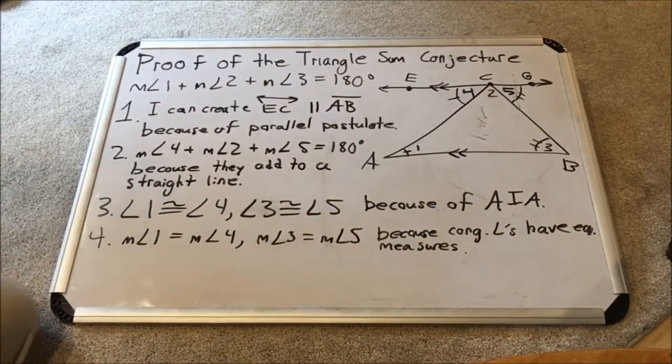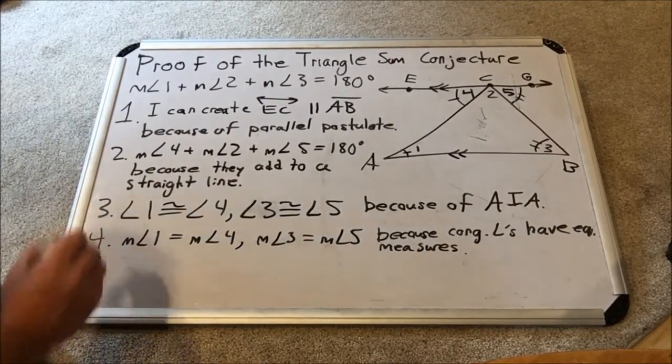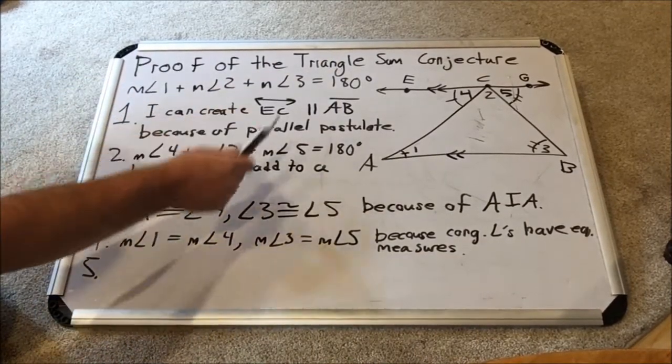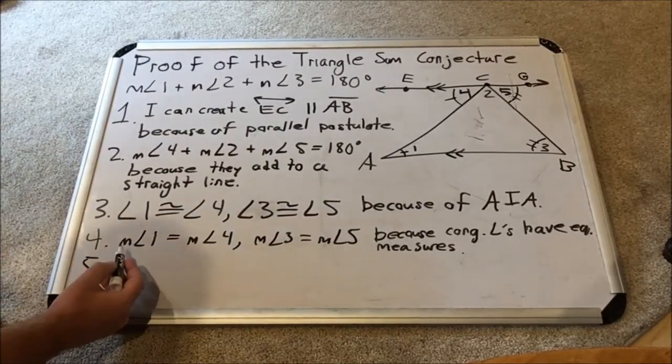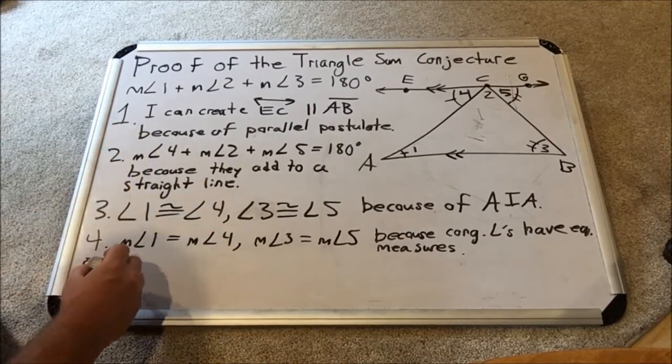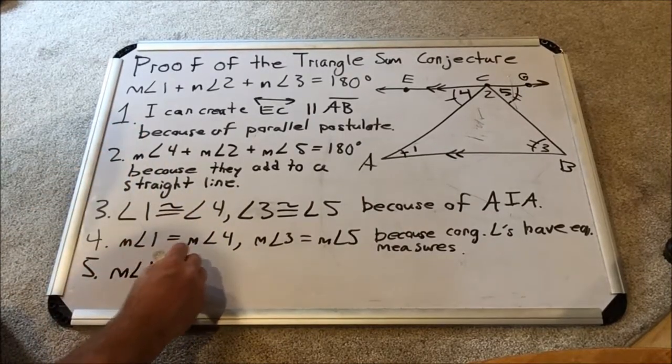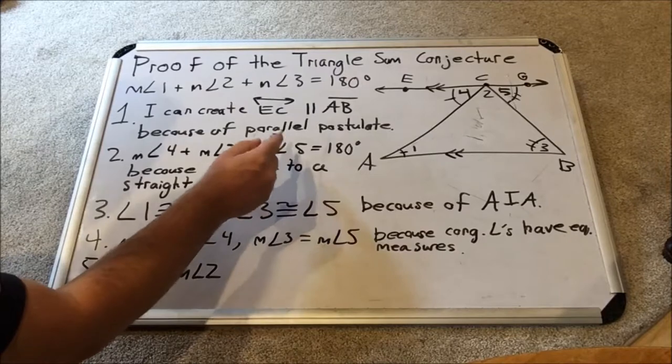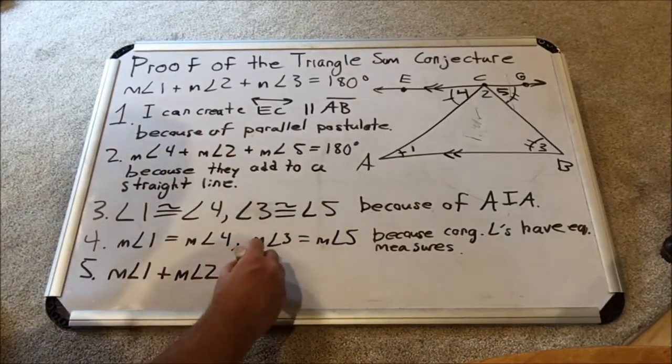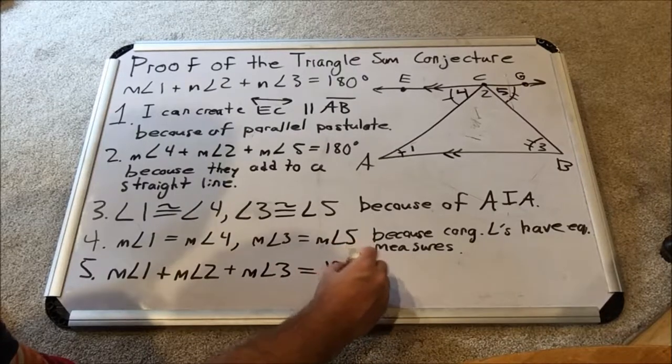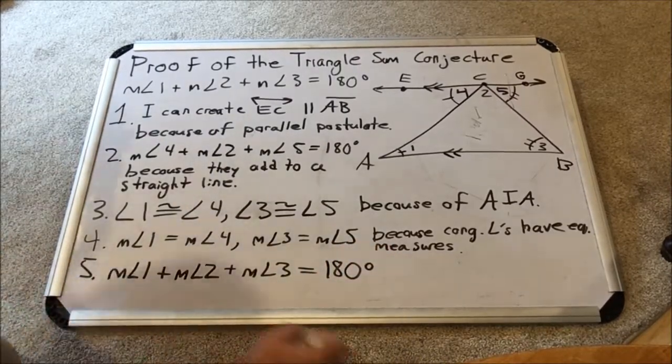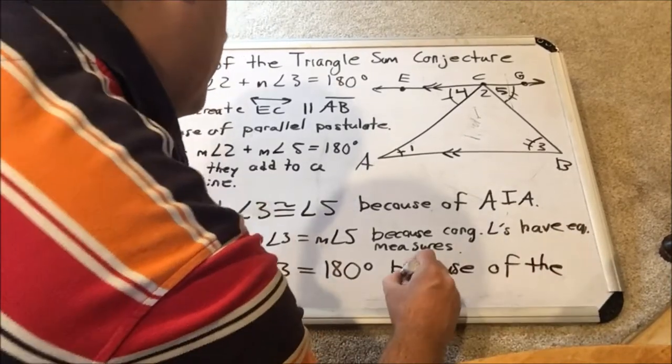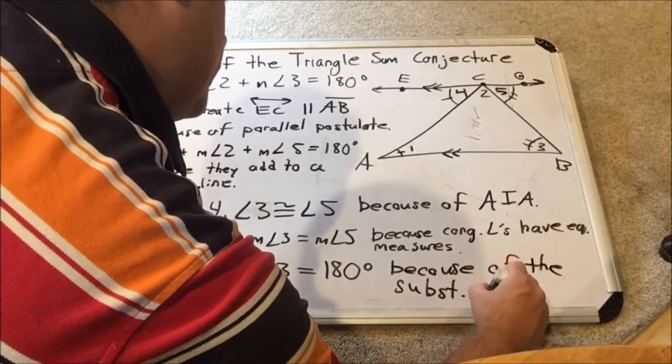And now it's time for the final step. Step 5. We are going to do a simple substitution. Let's measure angle 4 plus measure angle 2 plus measure angle 5 equals 180. Well, step 4 said that measure angle 1 equals measure angle 4, so I could substitute that in. So now I have measure angle 1 plus measure angle 2. Now before I write measure angle 5, I know that measure angle 3 equals measure angle 5, so I could substitute measure angle 3 in right there. And this all apparently equals 180 degrees. So this is because of the substitution property.